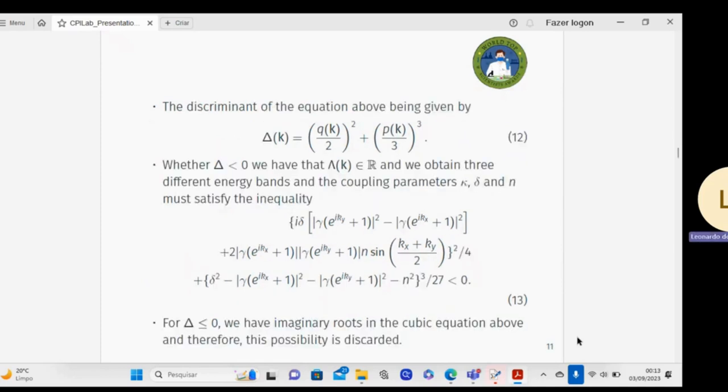I have the discriminant of the equation above being given by equation 12, where for negative values of delta, I have this following inequality for the non-Hermitian parameters as expressed in equation 13.